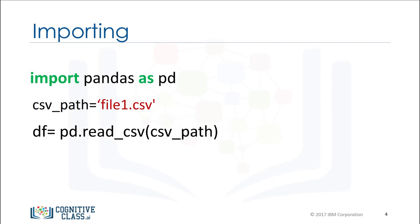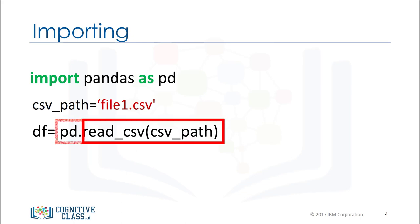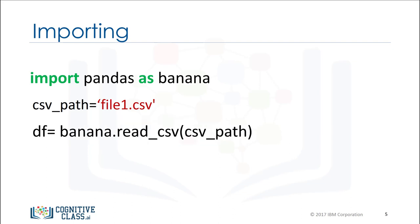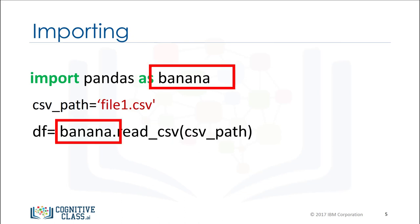Typing Pandas all the time may get tedious. We can use the as statement to shorten the name of the library. In this case, we use the standard abbreviation pd. Now we type pd and a dot followed by the name of the function we would like to use — in this case, read_csv. We are not limited to the abbreviation pd; we could use any term, such as banana. We will stick with pd for the rest of this video.